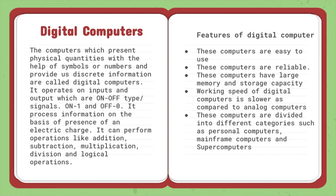Digital computers present physical quantities with the help of symbols or numbers and provide discrete information. They operate on input and output which are on or off type signals, where on is 1 and off is 0. This means these computers work on a binary system. They process information on the basis of presence of electric charge — if there is electric charge it is 1, and if there is no electric charge it is 0, in a positive digital logic system.